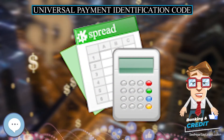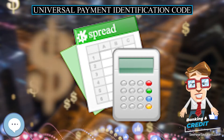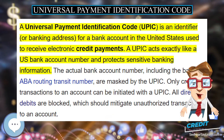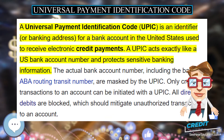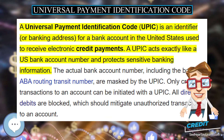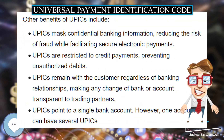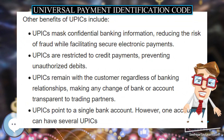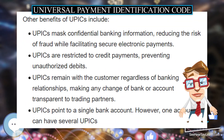A Universal Payment Identification Code, UPIC, is an identifier, or banking address, for a bank account in the United States used to receive electronic credit payments.